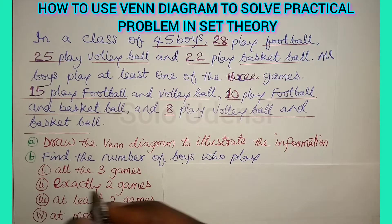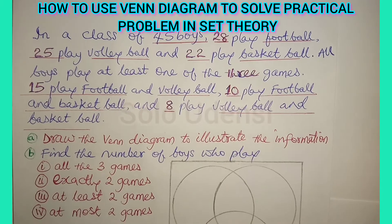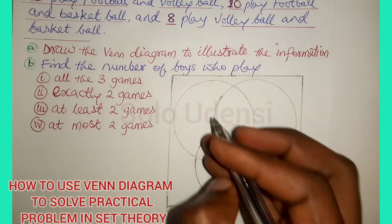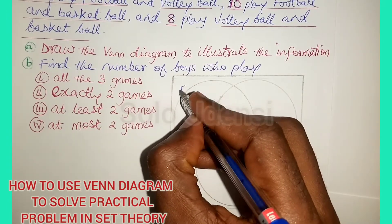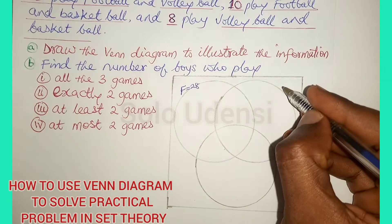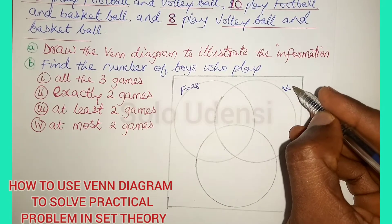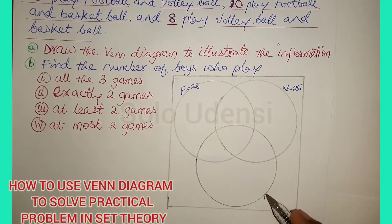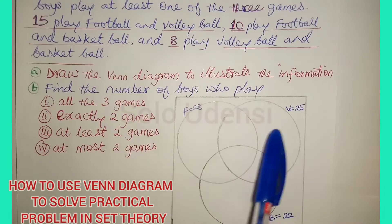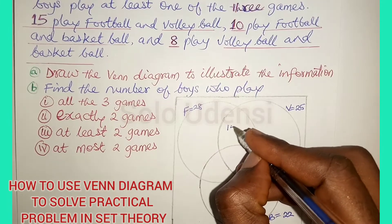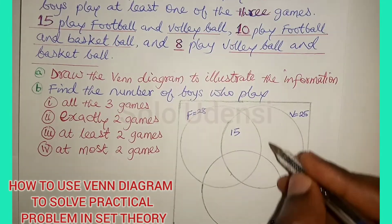In order to do the first part, we'll draw the Venn diagram with three circles. This one is football and it's 28. This one is volleyball and it's 25. This one is basketball and it's equal to 22. 15 play volleyball and football, so we put 15 here — it should cover all the overlapping places.